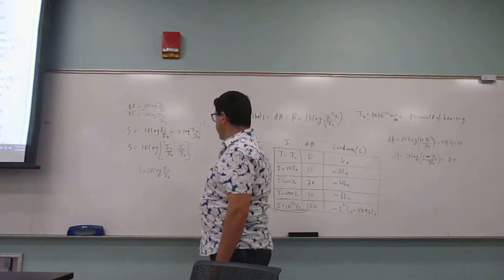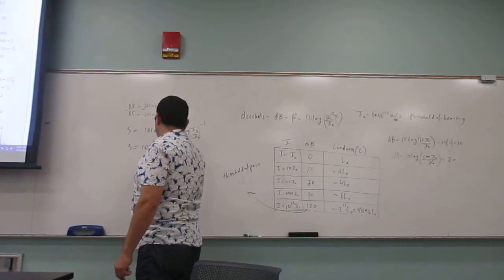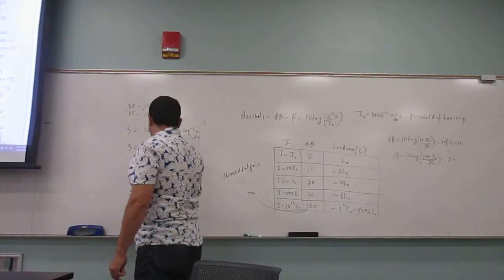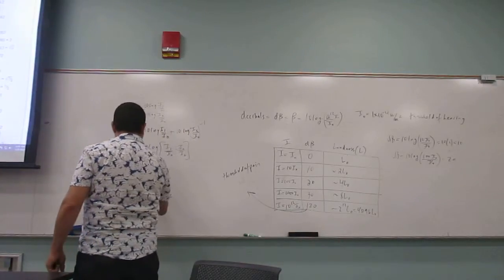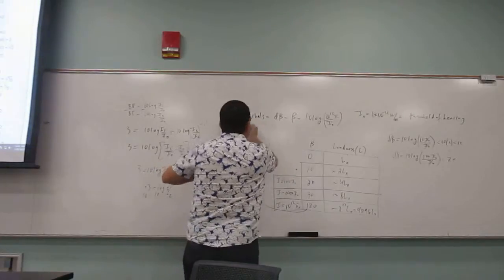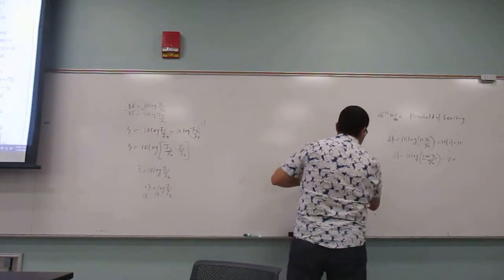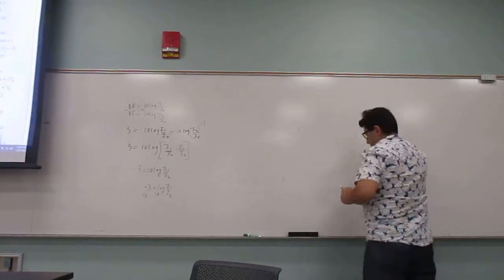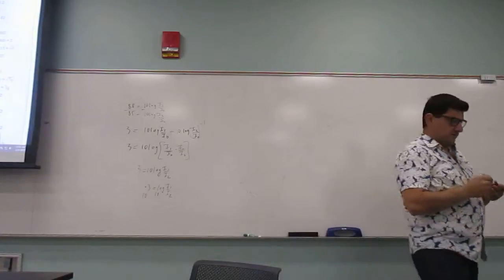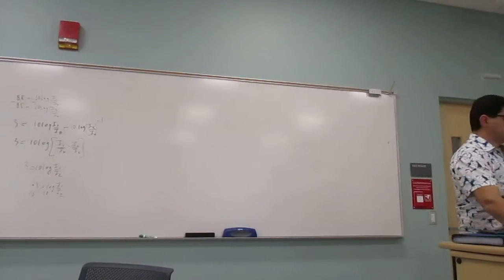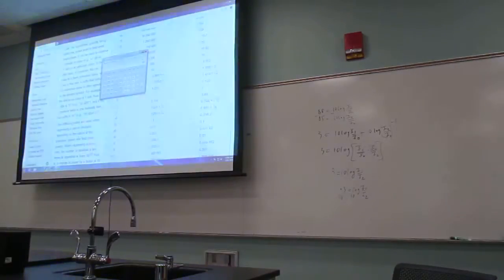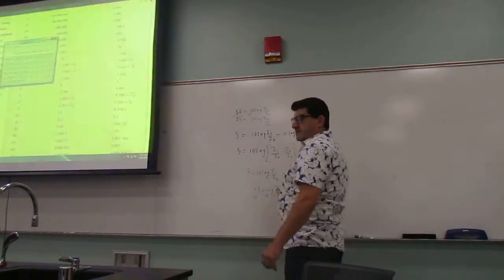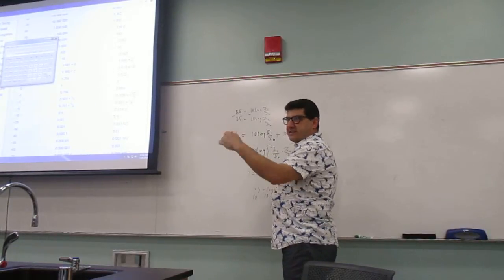So then divide by 10. So you get point three is equal to log of i1 over i2. Then raise this to the power 10. 10 to the power point three, what is that? Oh, it's about two.